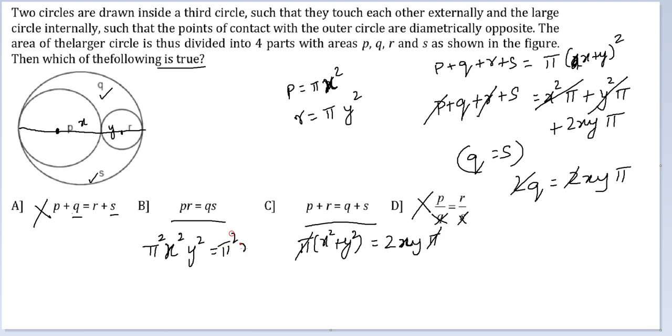So it will be X squared Y squared pi squared. Yes, both these sides are turning out to be equal. So option B will be our final answer.